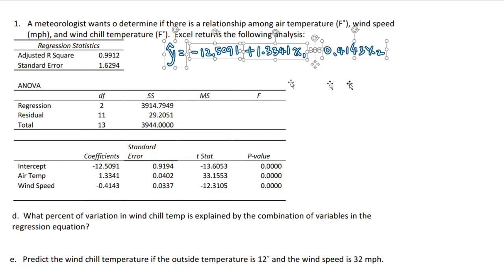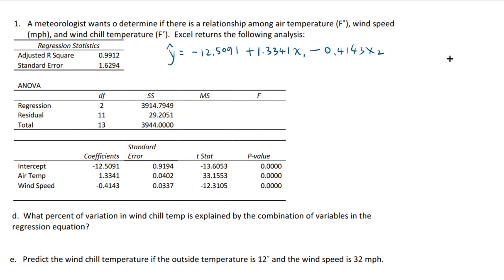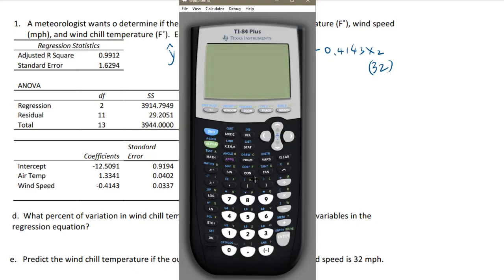Let's do part e first since we have the regression equation. It says predict the wind chill temperature if the outside temperature is 12 degrees and the wind speed is 32. So 12 is the value of x1 and 32 is the value of x2. You just have to plug these into the calculator and whatever that gives you, that's the answer.